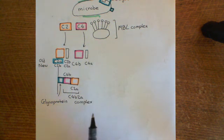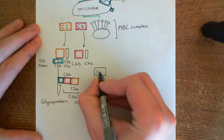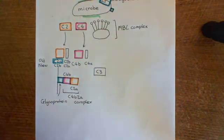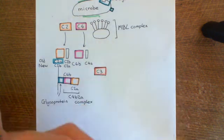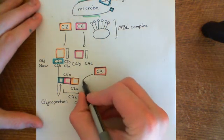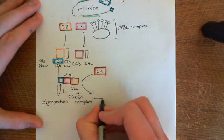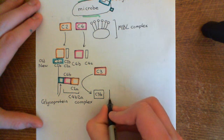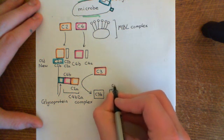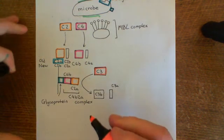You will hear people refer to this as the C4B2B complex because they'll be using the new nomenclature. So what does this C4B2A complex now do? It acts on another complement protein — C3. C3 is going to be split down by the C4B2A complex into a big subunit known as C3B and a small subunit known as C3A. Everyone unanimously agrees on these names, so there's no more mess like there is with C2.